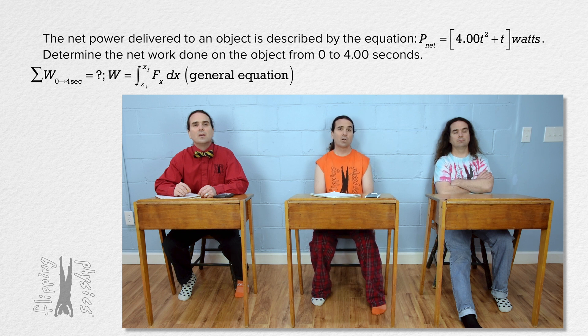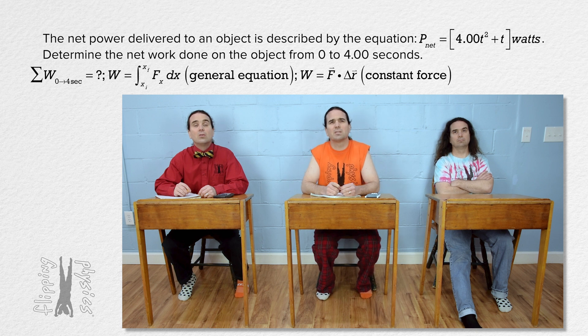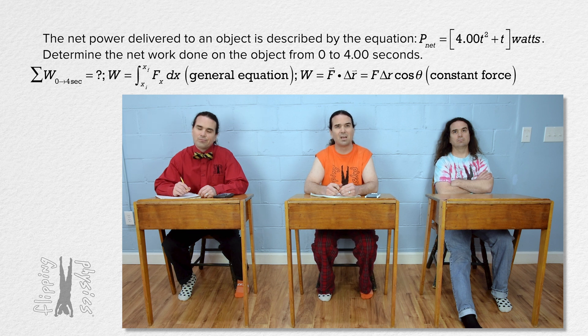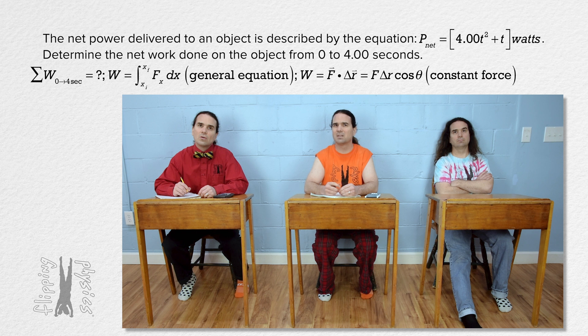The equation for work done by a constant force equals the dot product of force and displacement or force times displacement times cosine theta. But I do not see how any of those help us because the net power equation is with respect to time, not position.